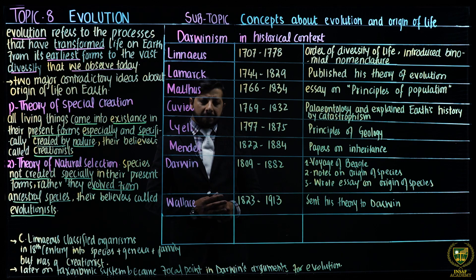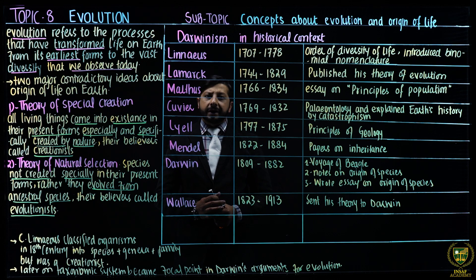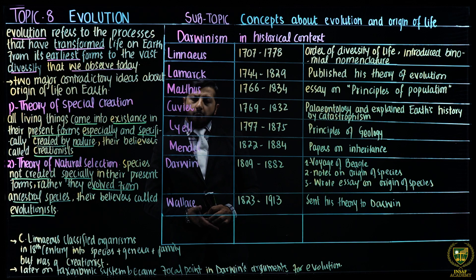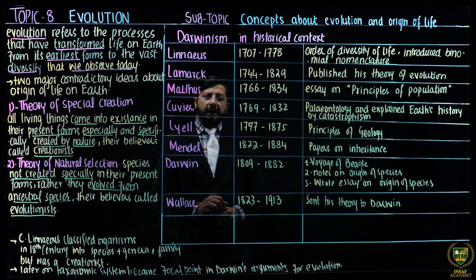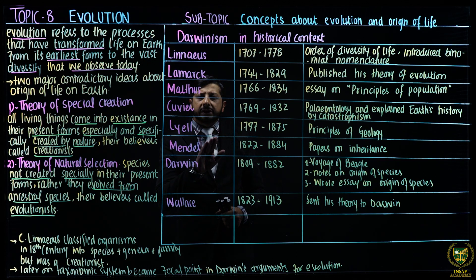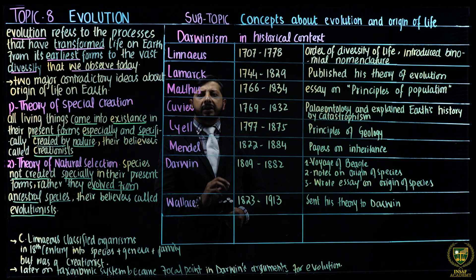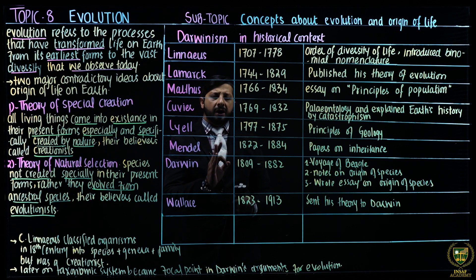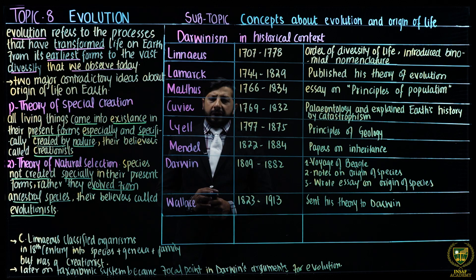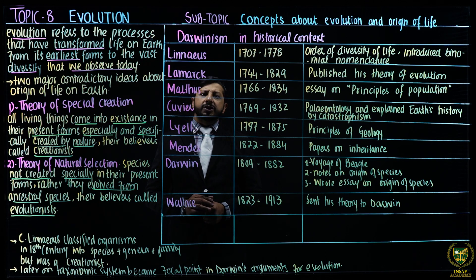Next is Mendel. He was born in 1822 and died in 1884. He is well known for Mendel's laws of inheritance — he gave two laws. He is also known as the father of classical genetics because he started the first studies of inheritance, giving us the law of segregation and the law of independent assortment, which are still valid today.